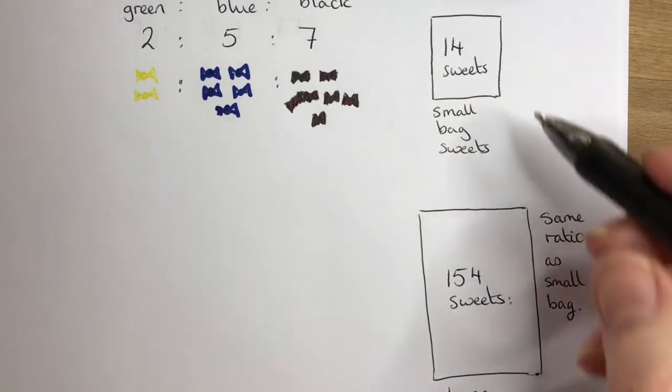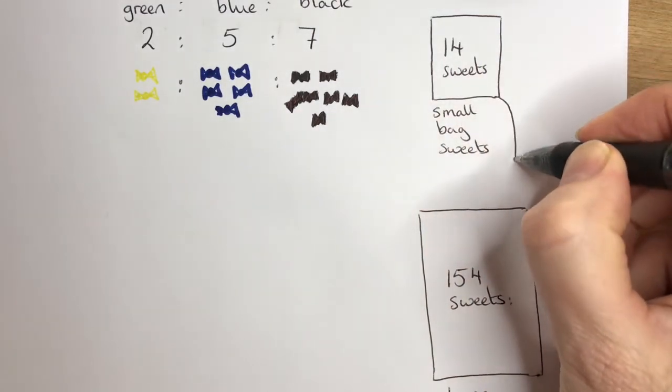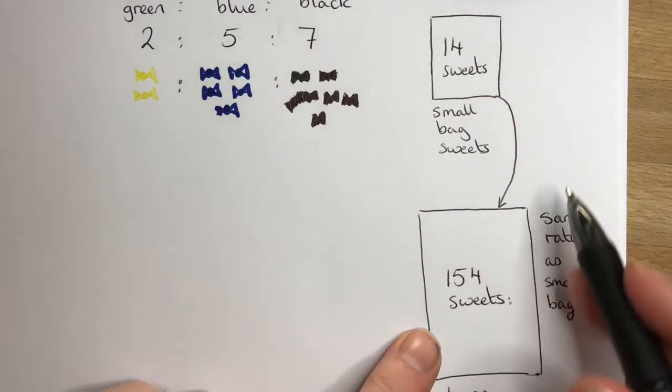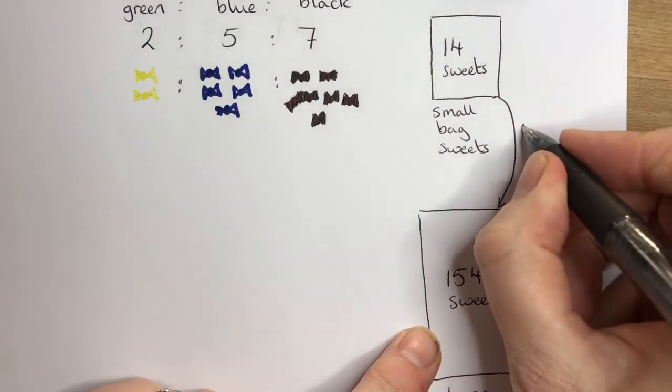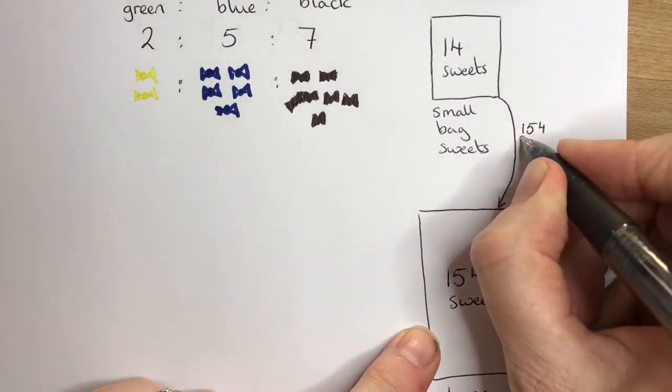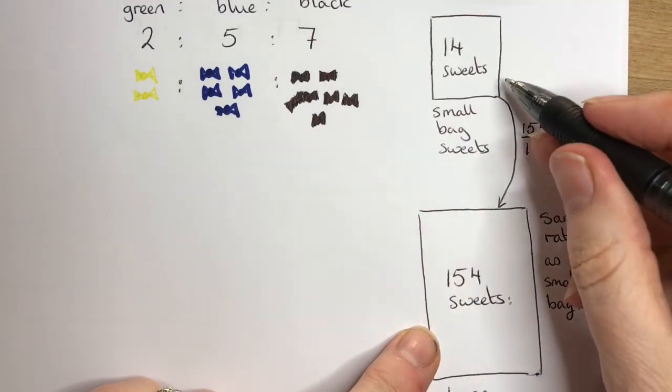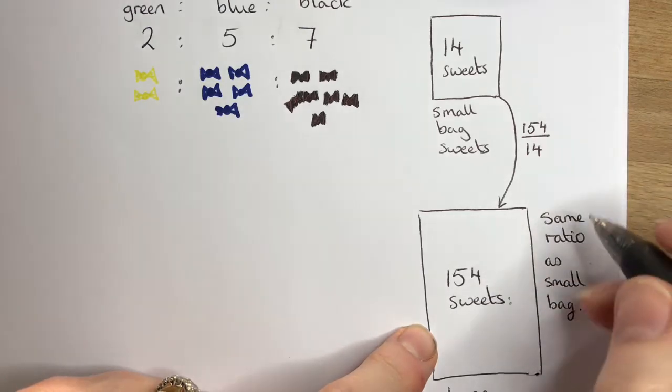To work that out, we have to work out how many times bigger is this larger bag compared with the smaller bag. How do we do that? If we take the larger bag, 154, and divide it by 14, we find out how many times bigger the larger bag is compared with the smaller bag.